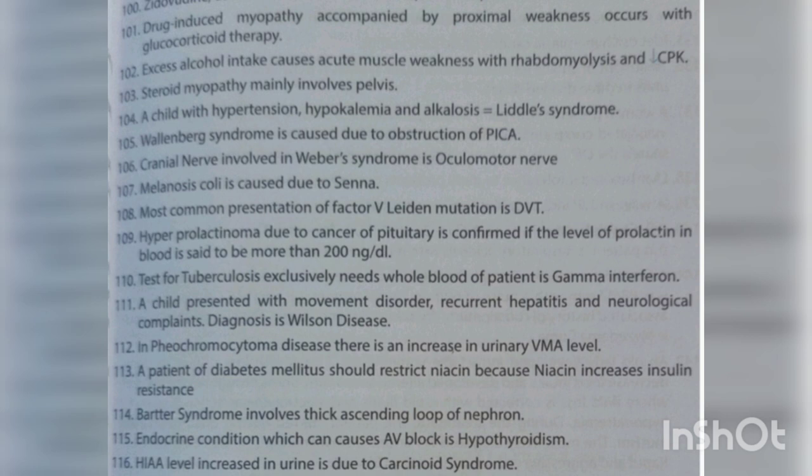Hyperprolactinoma due to cancer of the pituitary is confirmed if the level of prolactin in blood is more than 200 nanogram per dL. The test for tuberculosis that exclusively needs whole blood of patients is gamma interferon. A child presented with movement disorder, recurrent hepatitis, and neurological complaints — the diagnosis is Wilson's disease.